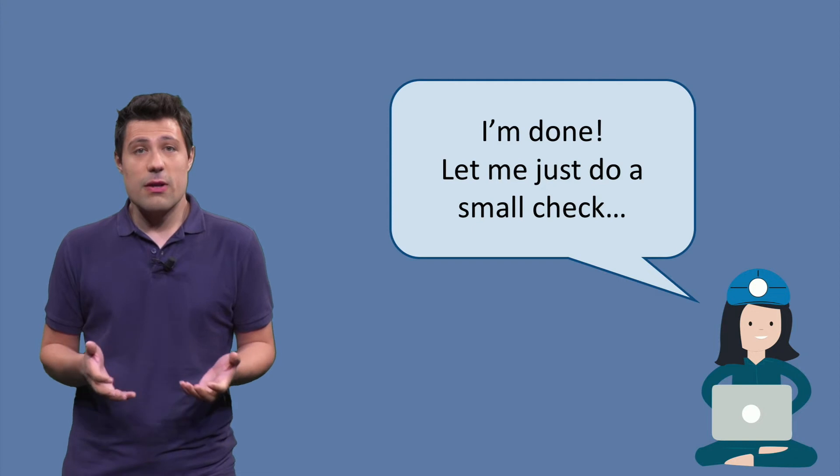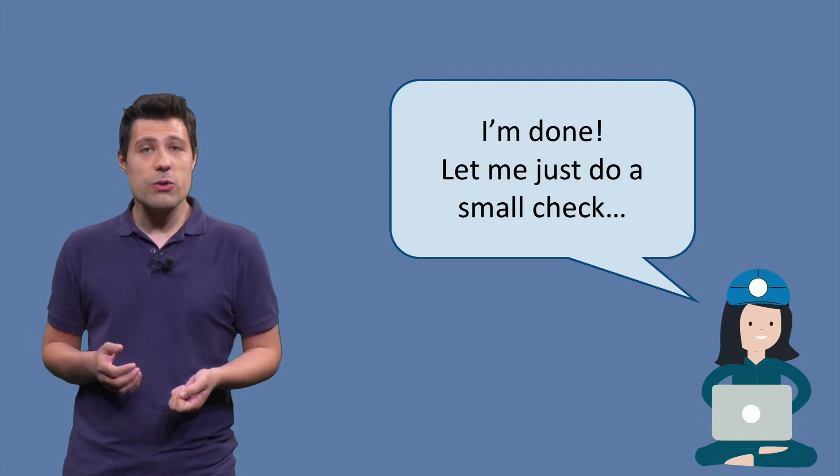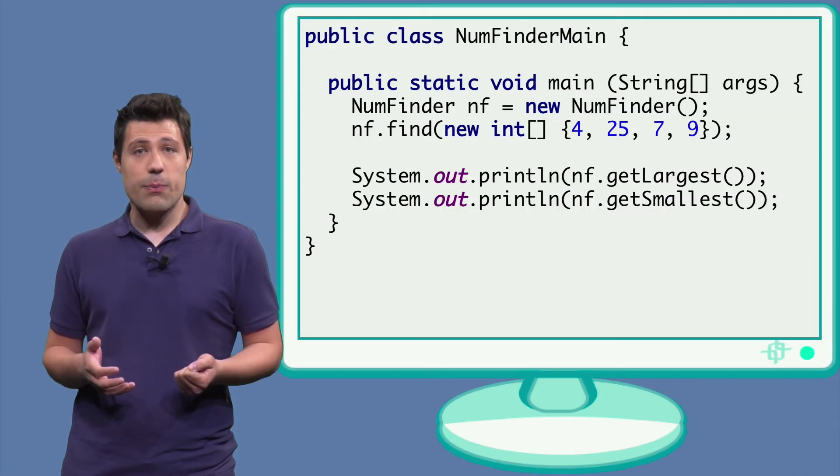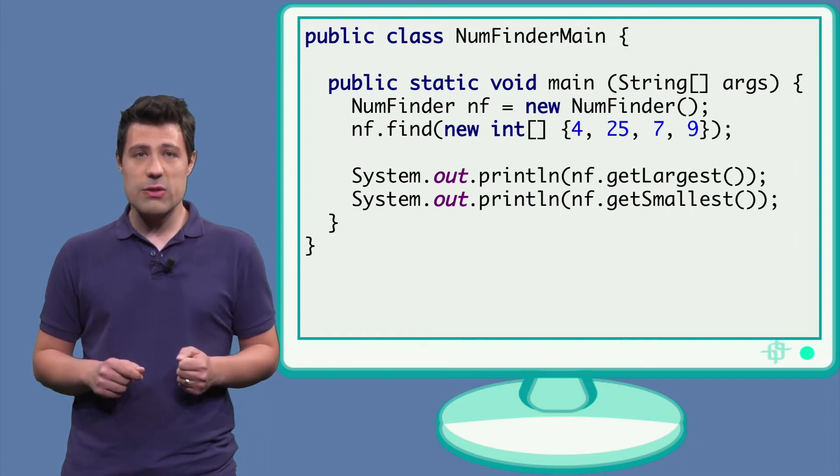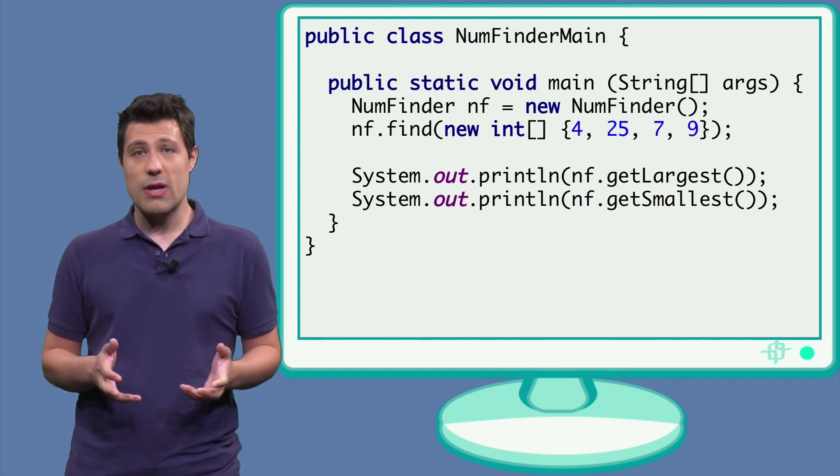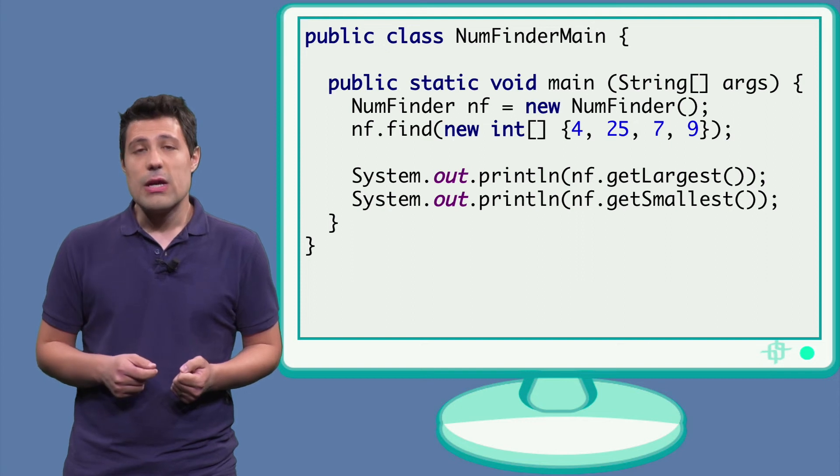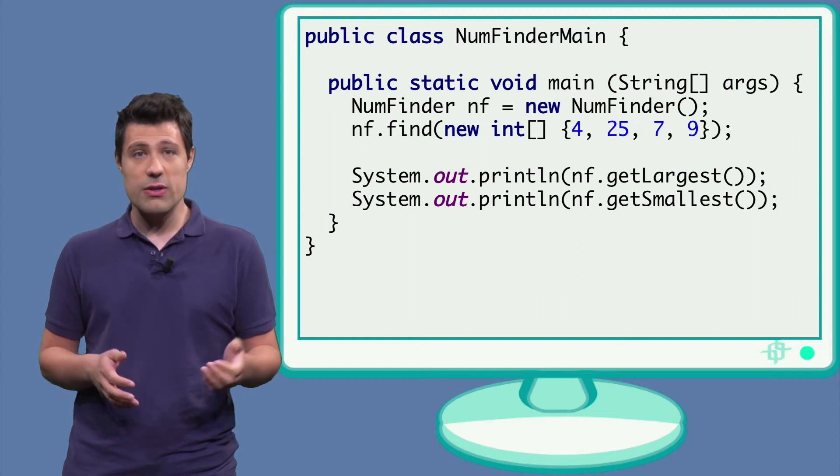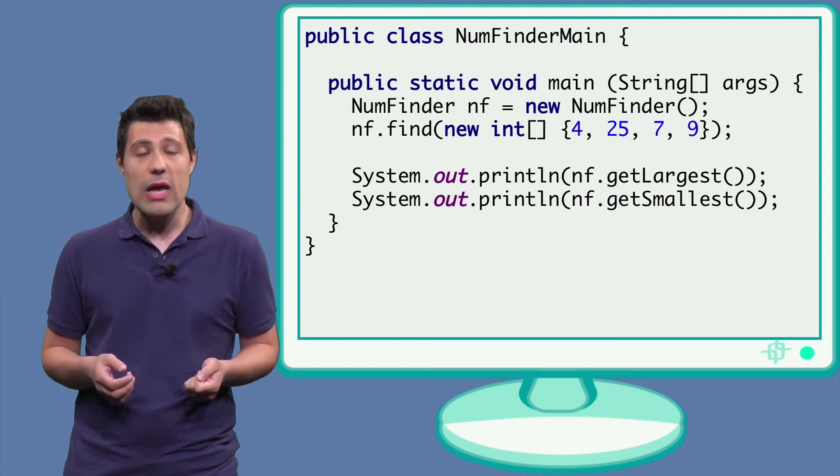And ourselves as developers, that's what we often do. We implement the requirements and we do small checks to make sure it works. One way to do a small check would be to come up with a main method that tries the program a bit. As an example, let's see what happens if we execute our program with some random numbers as inputs, like 4, 25, 7 and 9. To see if the program behaves correctly, let's just print the largest and the smallest fields. That's also quite common, right? We just print things on the screen and we check them manually.